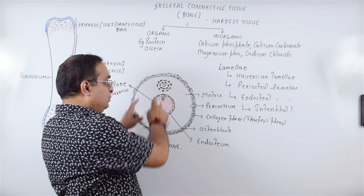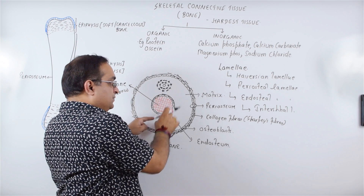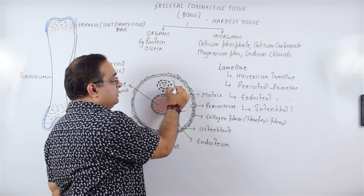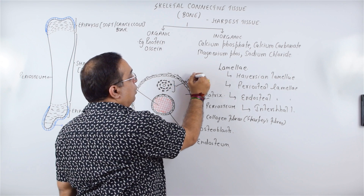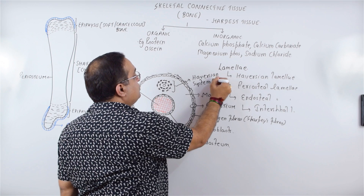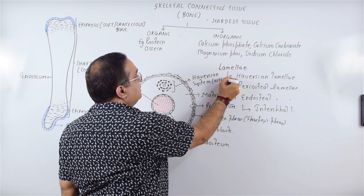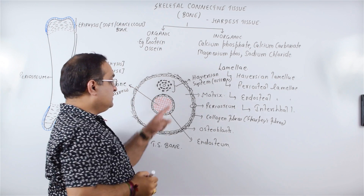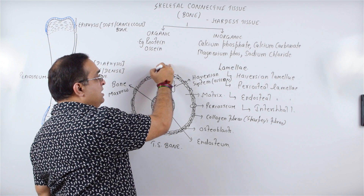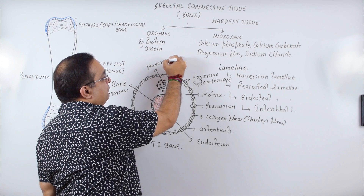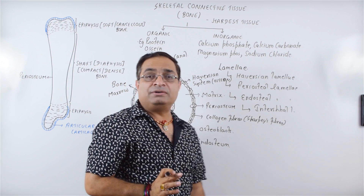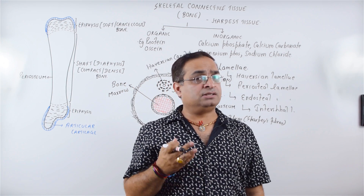This transverse section of the bone shows the periosteum, endosteum, the matrix arranged in layers, and the Haversian system — also called the osteon. We will now draw an enlarged view of this Haversian system. The circular structure you can see here is the Haversian canal. Haversian canals are a typical feature of mammalian bones.